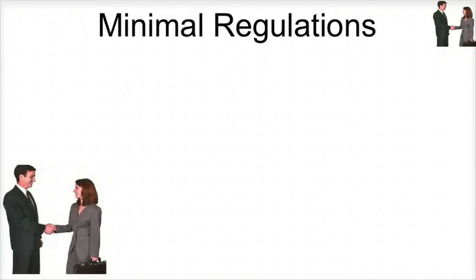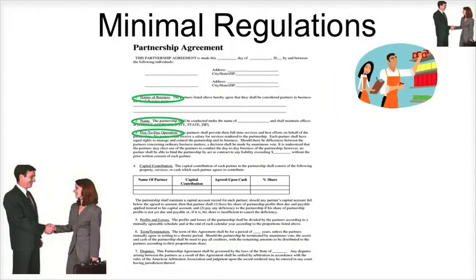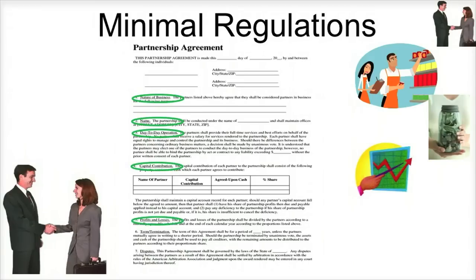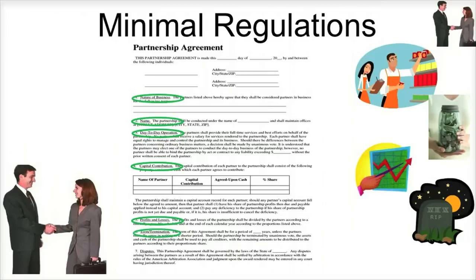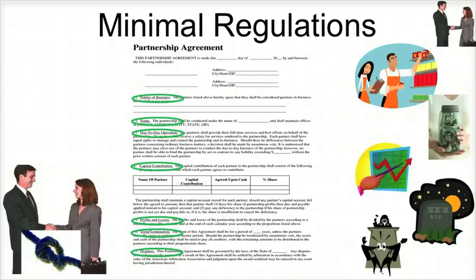Although not required by law, potential partners would be wise to create a partnership agreement in which partners agree to the name and nature of the business, their day-to-day operational commitment, what capital they will contribute, how profits and losses will be shared, how and when the partnership will terminate, and how disputes will be resolved. Partnership agreements, especially between lifelong friends, are very important because once two or more people enter into a partnership, they are legally bound to each other until the partnership is dissolved.